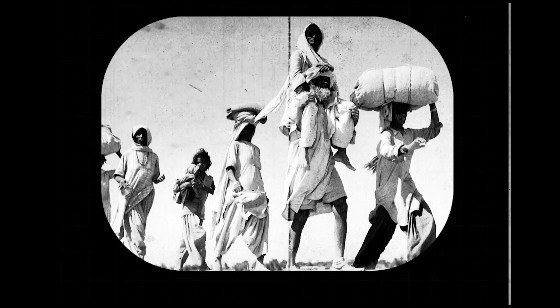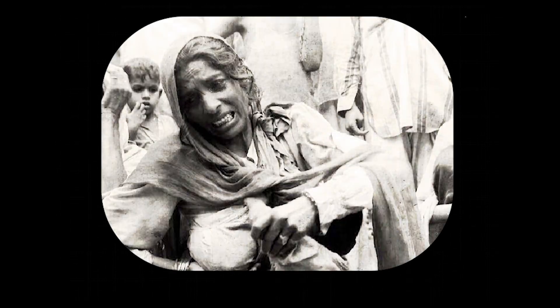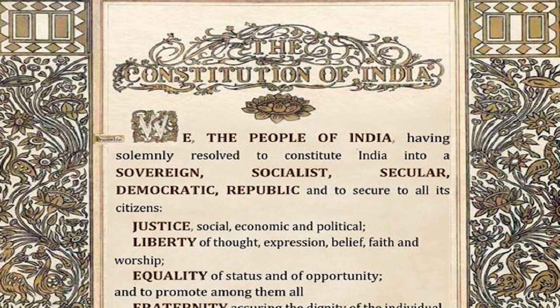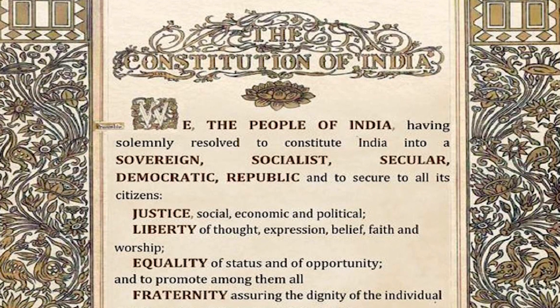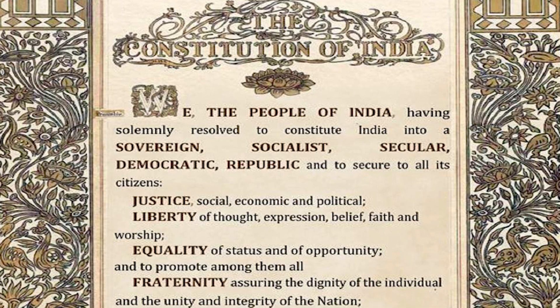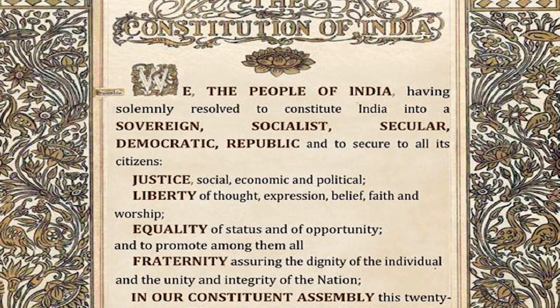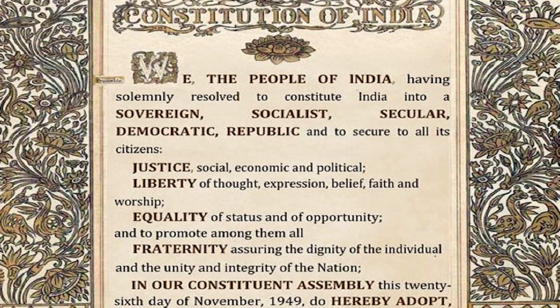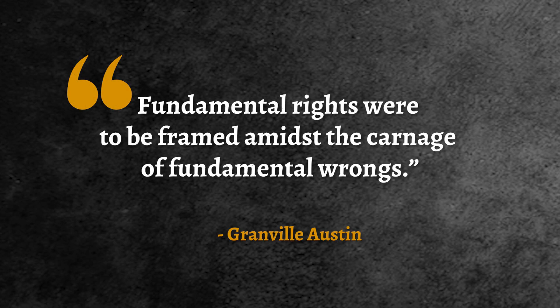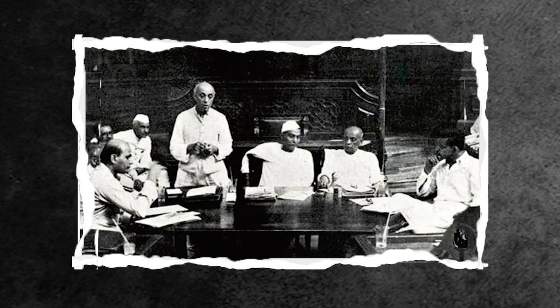When the constitution was prepared, the environment was hugely challenging — partition, religious strife, division on the basis of caste, weak role of women, and so on. And yet, the makers chose the fundamental human values of justice, liberty, equality, and fraternity as our core constitutional values, and ensured that laws would protect these principles. As the noted historian Granville Austin put it aptly, fundamental rights were to be framed amidst the carnage of fundamental wrongs.